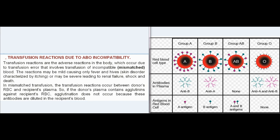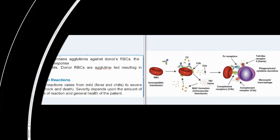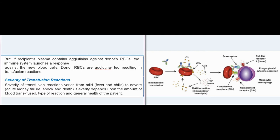Transfusion Reactions due to ABO Incompatibility: Transfusion reactions are adverse reactions in the body occurring due to transfusion error involving incompatible (mismatched) blood. Reactions may be mild, causing only fever and hives (skin disorder characterized by itching), or may be severe, leading to renal failure, shock, and death. In mismatched transfusion, reactions occur between the donor's RBCs and recipient's plasma. If the donor's plasma contains agglutinins against recipient's RBCs, agglutination does not occur because these antibodies are diluted in recipient's blood. But if recipient's plasma contains agglutinins against donor's RBCs, the immune system launches a response against the new blood cells.